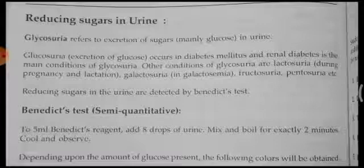Glycosuria refers to the excretion of sugars — mainly glucose — in the urine. Glyco means glucose, uria means urine. It occurs in diabetes mellitus and renal diabetes. Other conditions of glycosuria include lactosuria during pregnancy and lactation, galactosuria, and fructosuria. All reducing sugars present in the urine are detected by the Benedict's test.